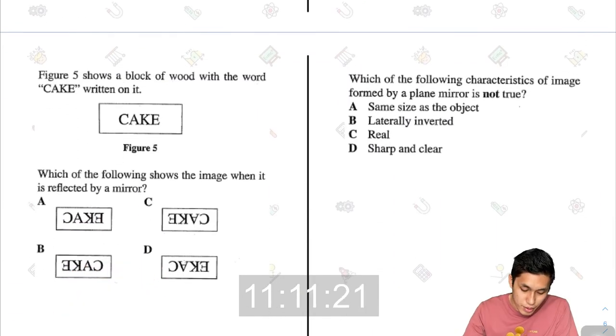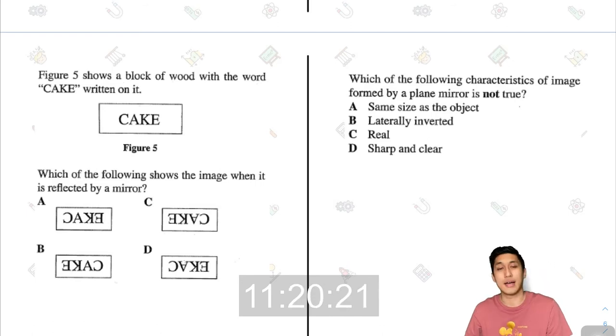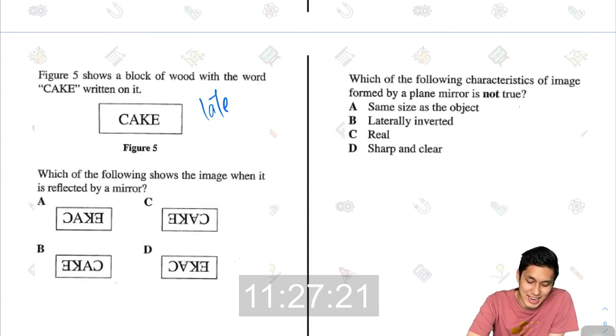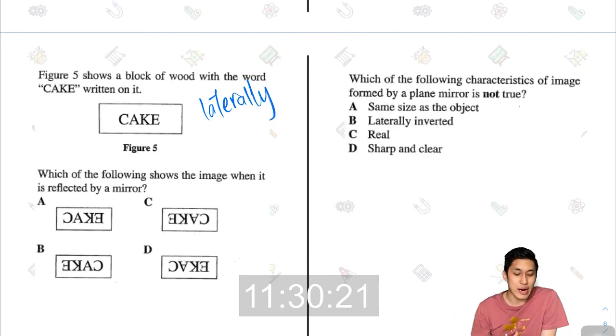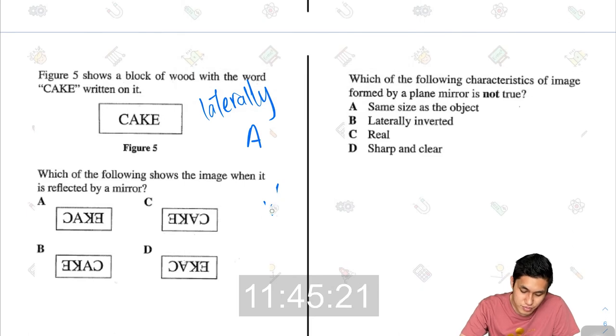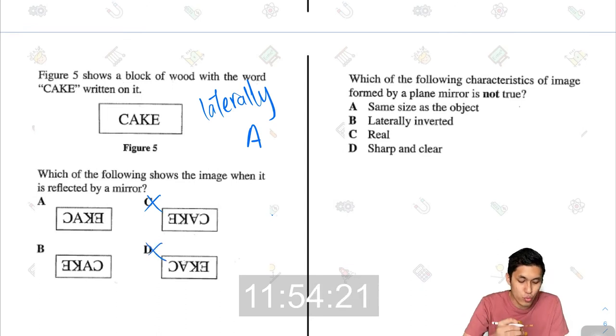Next, figure 5 shows a block of wood with the word cake written on it. I would like to have some cake. Which of the following shows an image when it is reflected by a mirror? When there is reflection by a mirror, it gets laterally inverted. That means left is right, right is left. You don't get upside down. If a is like this, when it gets laterally inverted, it'll also be a. You won't get a v-shape, an upside down a. So this is definitely wrong. C and d are definitely wrong. So which one is correct? If you really can't tell, you can do one thing.